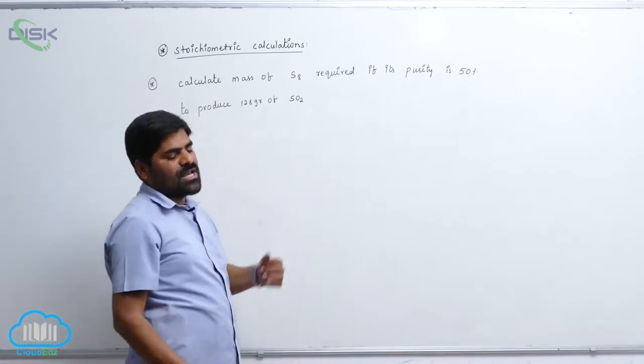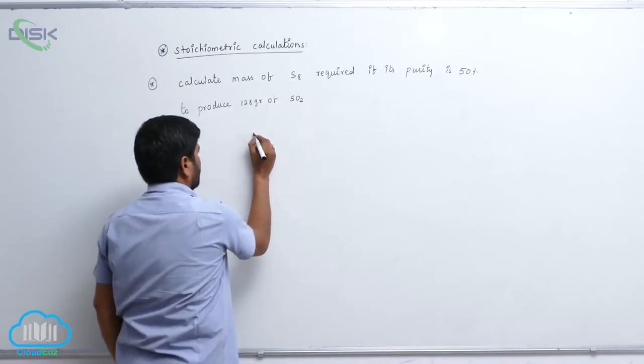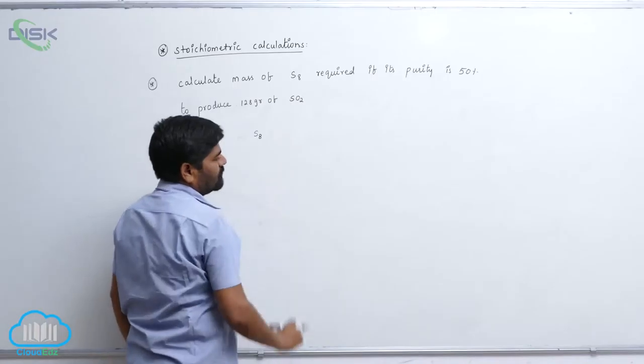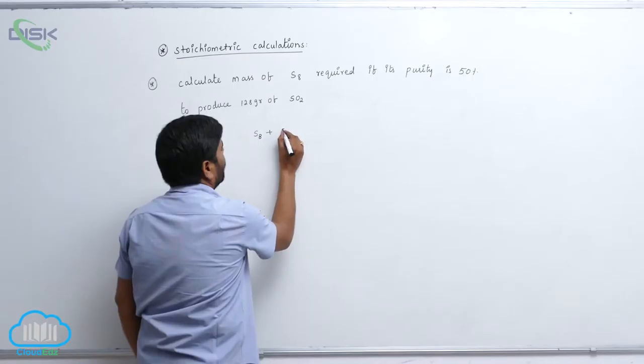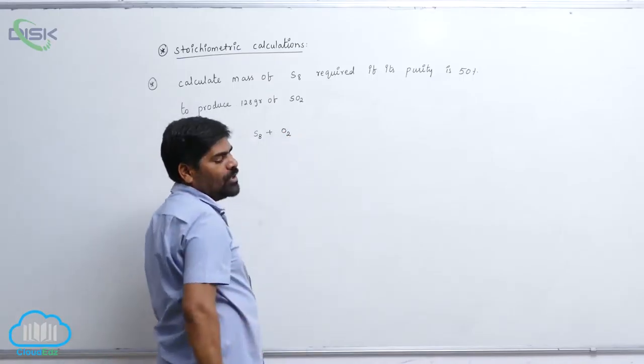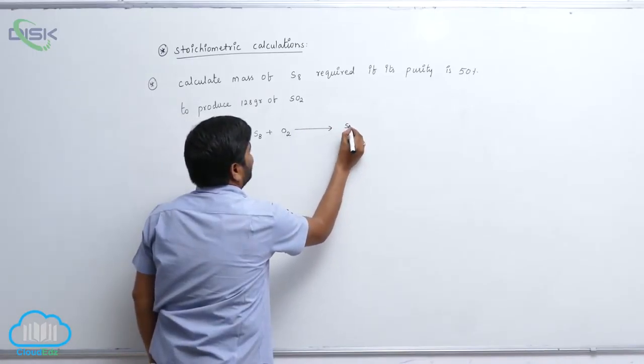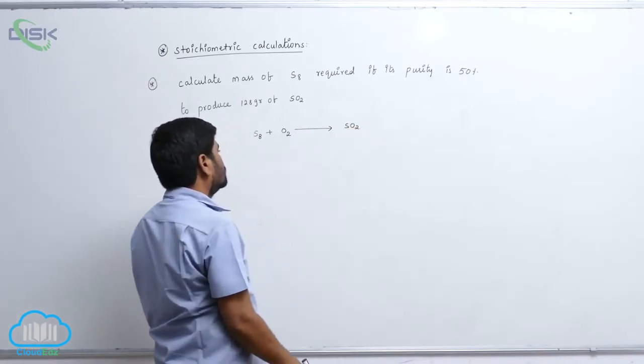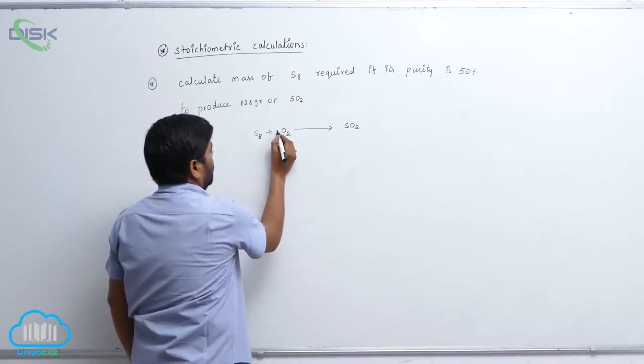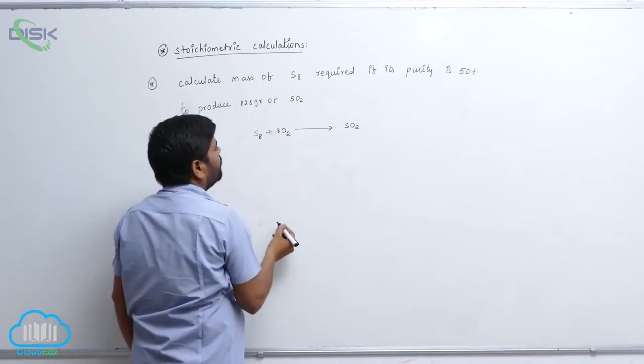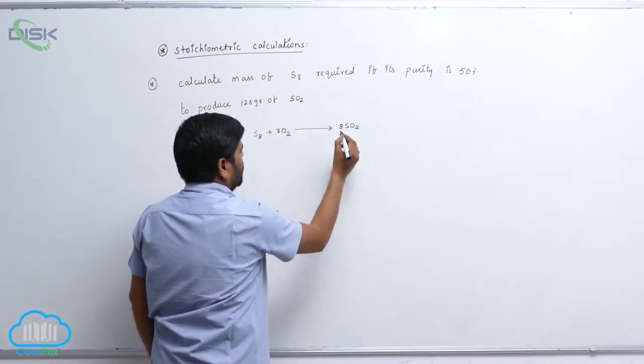Whenever this type of problem is given, first you balance the equation. S8 reacts with oxygen molecule to convert into sulfur dioxide. How many sulfurs? Here is 8. So if you put here is 8, then 8 to 16. So 8 moles of SO2.